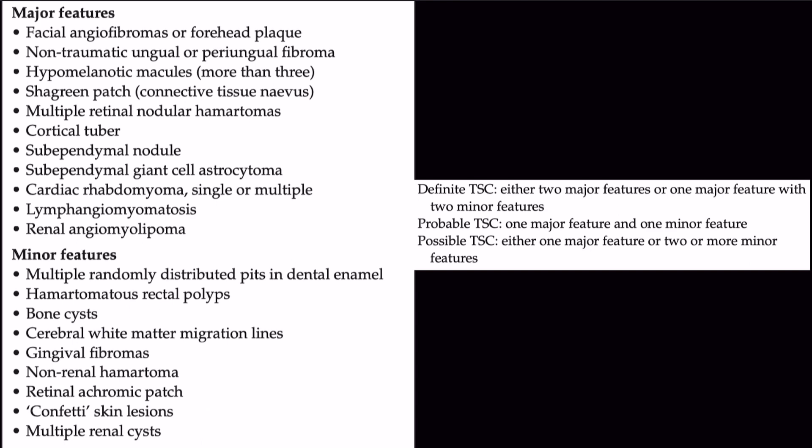This slide shows the diagnostic criteria for tuberous sclerosis. Please don't try to memorize it all. If asked in an exam, give a broad overview — tell three major and three minor criteria — and confess to the examiner that you forgot the rest.